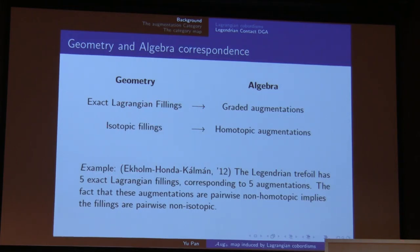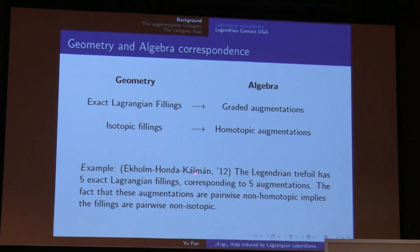The other direction may not work — there are augmentations that do not come from Lagrangian filling. But we can still use this: isotopic fillings give homotopic augmentations. Sometimes it's not easy to see whether two fillings are isotopic, but we can use this algebraic framework to check whether two augmentations are homotopic. An example given by Ekholm, Honda, and Kálmán says the Legendrian trefoil has five fillings corresponding to five augmentations, and we can check the five augmentations are pairwise different, so the fillings are different.